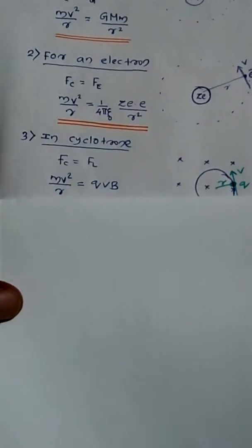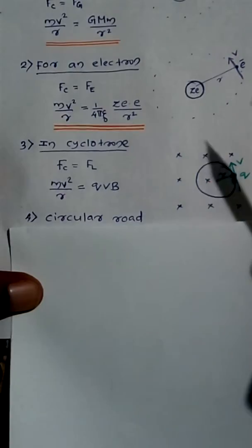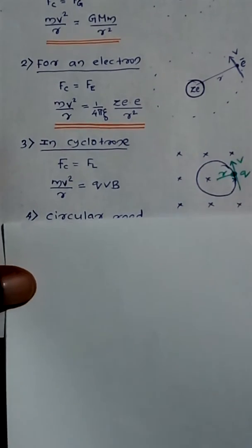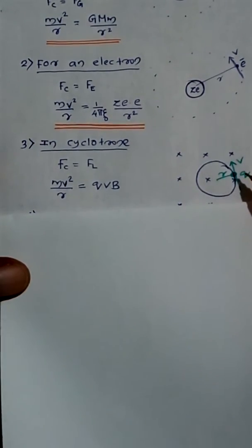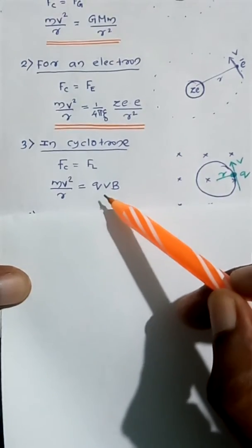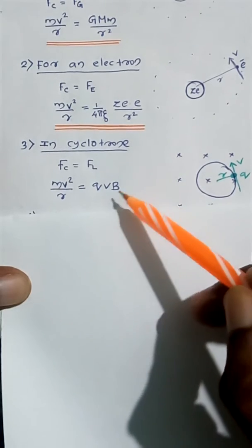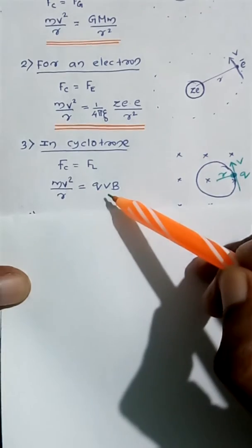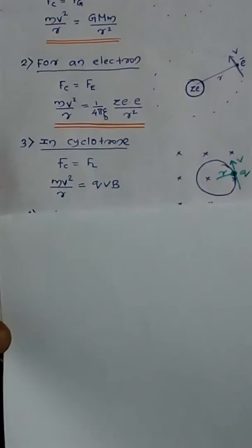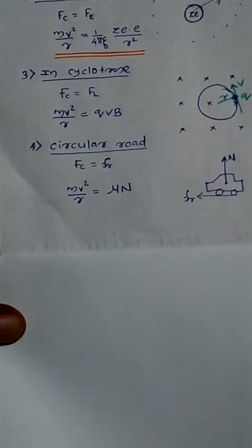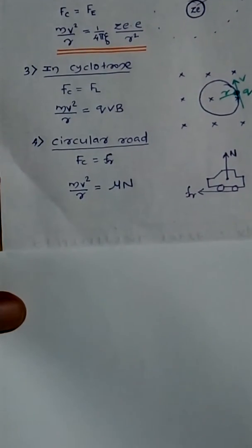Similarly, for a cyclotron — when a charge enters a perpendicular magnetic field, it experiences maximum Lorentz force and executes circular motion. Suppose the radius is r, the charge is q, and the magnetic field is B. The maximum Lorentz force is qvB (since the full equation is qvB sinθ and sinθ = 1 here), so F = qvB. The necessary centripetal force is provided by this maximum Lorentz force: mv²/r = qvB.